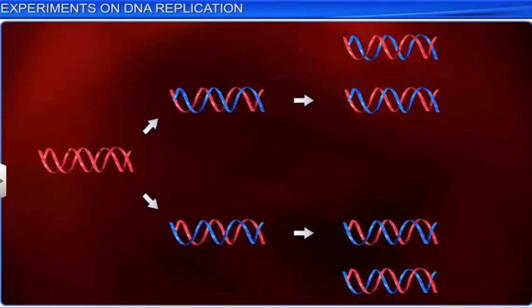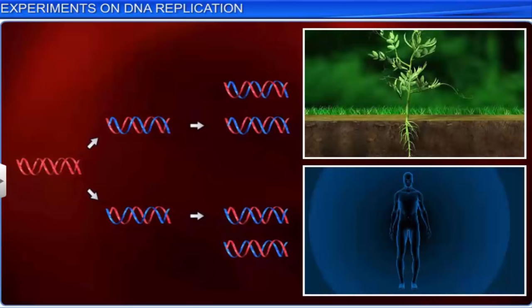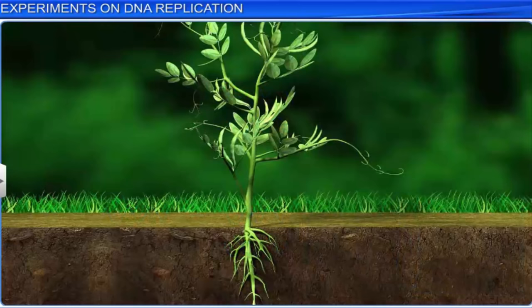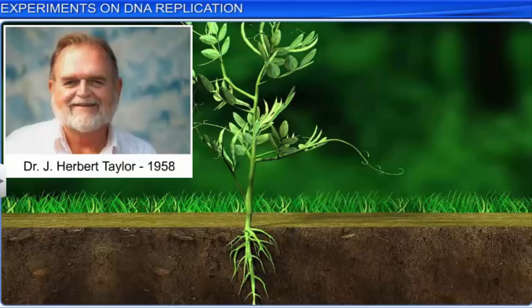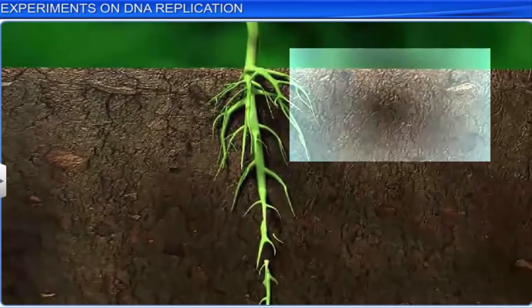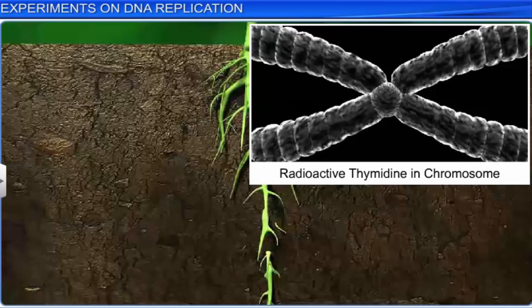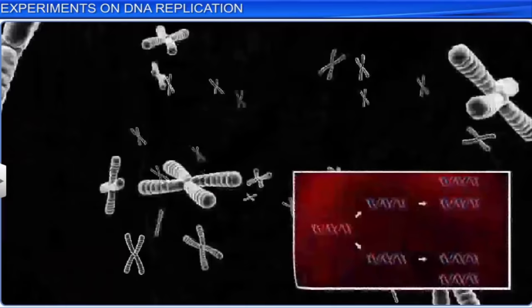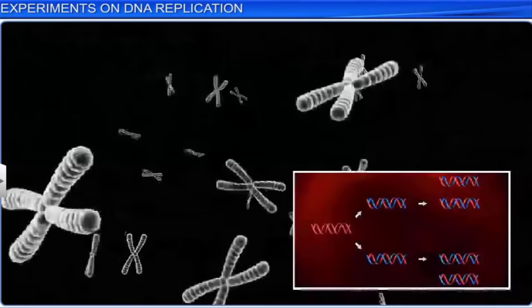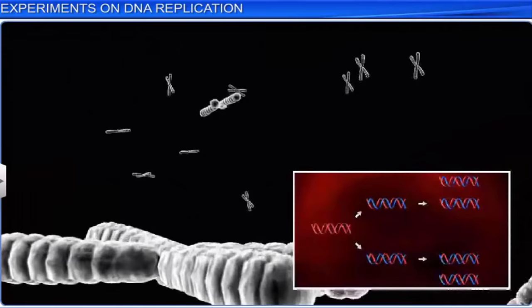Similar experiments were further conducted in higher organisms such as plants and human cells to prove the same. One such experiment was conducted by Dr. J. Herbert Taylor and his colleagues in 1958, in root tip cells of Vicia faba, or faba beans, using radioactive thymidine to determine the distribution of newly synthesized DNA in chromosomes. Here again, the experiment proved that DNA replication, even in chromosomes, was semi-conservative. Therefore, with multiple experiments conducted by different scientists, it was concluded that DNA replicates semi-conservatively.